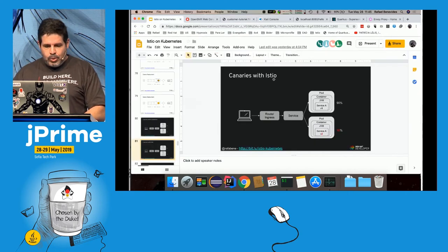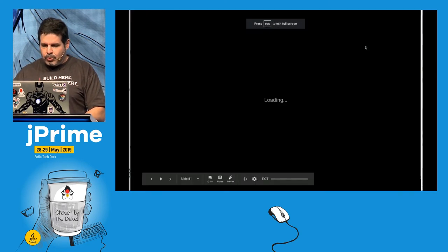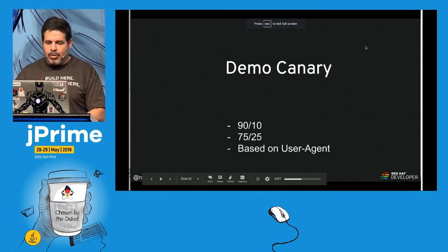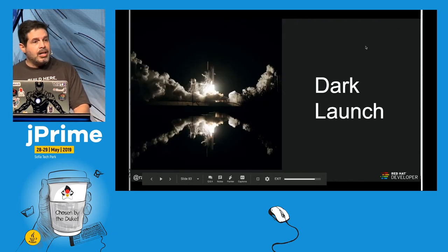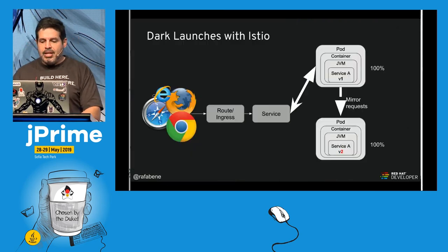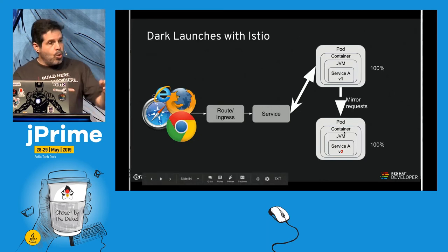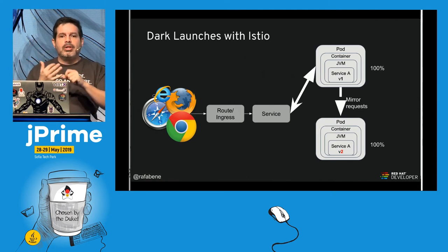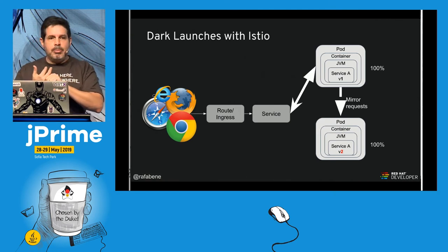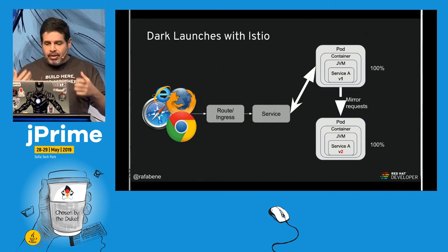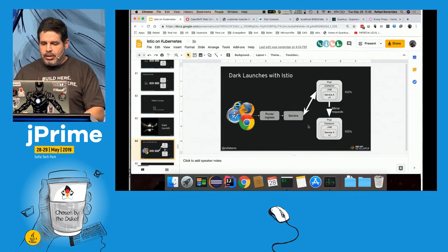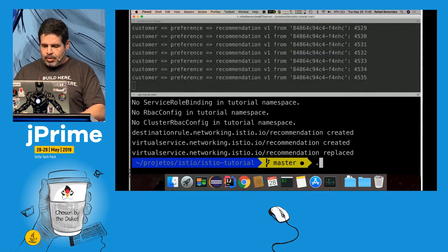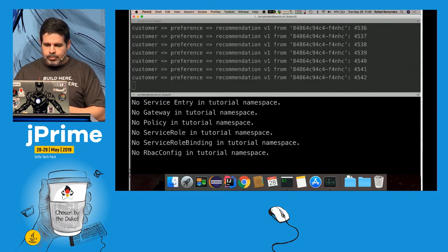Istio enables smart canary releases and dark launches. A dark launch places a version in production where the user never sees the response, but the request is mirrored to v2. You can test whether v2 performs well — check its memory and CPU consumption — even while users still see only v1.